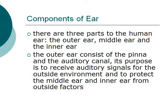There are three parts to the human ear: the outer ear, the middle ear, and the inner ear. The outer ear consists of the pinna and auditory canal. Its purpose is to receive auditory signals from the outside environment and to protect the middle ear and inner ear from outside factors.